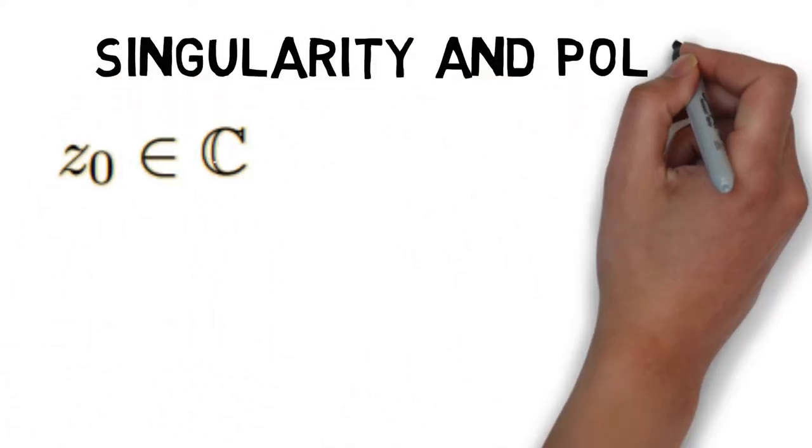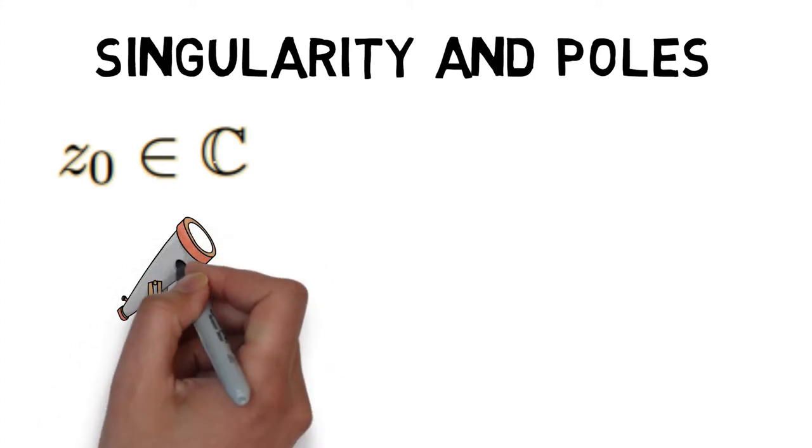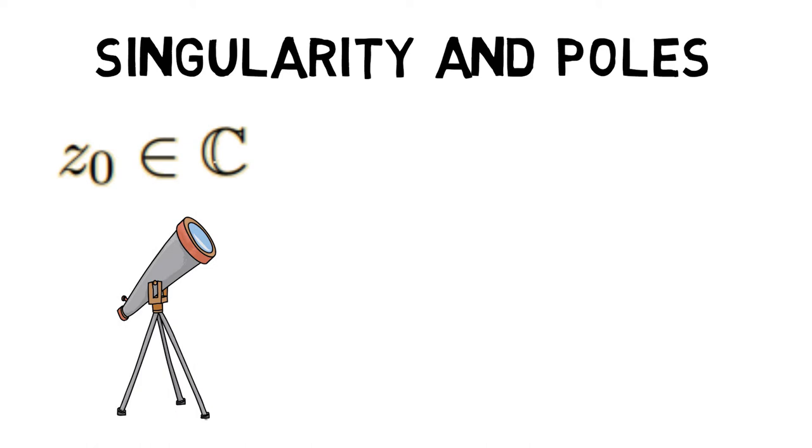A point z0 belonging to a complex z is a singular point or a singularity of a function f if f is not analytic at z0 and every neighbourhood of z0 contains a point at which f is analytic.